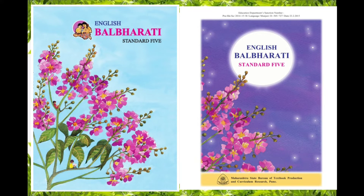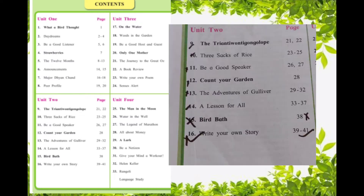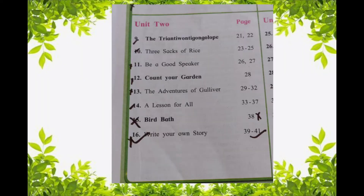Students, till now we have finished lesson number 10 of unit number 2. Some lessons are excluded from the syllabus: 'Be a Good Speaker', 'Count Your Garden', 'The Adventure of Gulliver', and 'Bird Bath'. These four lessons are excluded. From unit 2 we have to learn only lesson number 9, lesson number 10, lesson number 14 and lesson number 16.